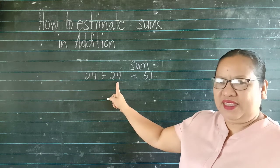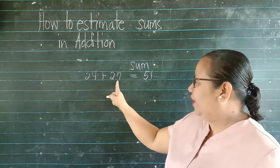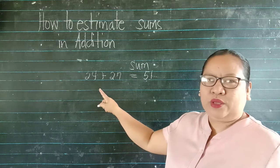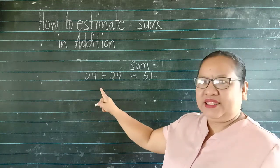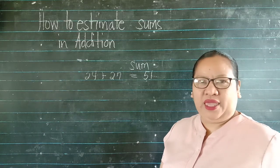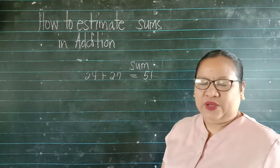Okay? This one, 24 and 27, is what we call addends. Addends are numbers that we add.